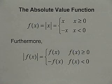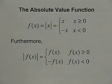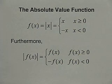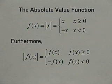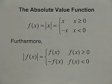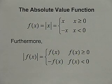Let's take a look at the definition of the absolute value function. The absolute value function is given by f of x equals the absolute value of x, which equals x when x is greater than or equal to 0, and equals negative x when x is less than 0. Furthermore, the absolute value of f of x equals f of x when f of x is greater than or equal to 0, or negative f of x when f of x is less than 0.